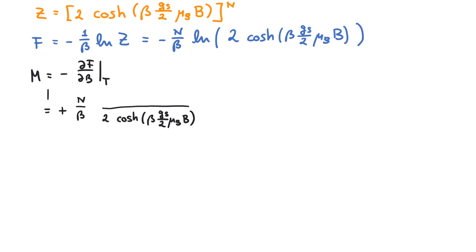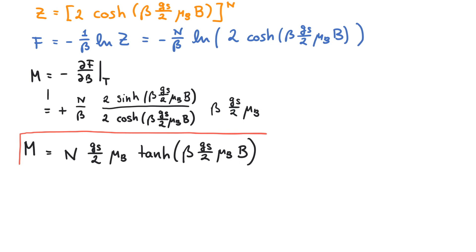Next, we continue with the chain rule. The derivative of the hyperbolic cosine is the hyperbolic sine, and finally the derivative of its argument. Then we rearrange it and combine everything to obtain the hyperbolic tangent.